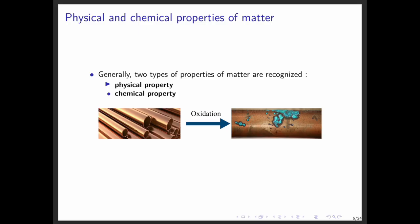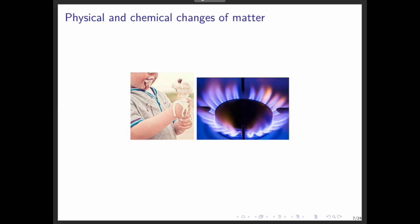Just like properties, the changes matter undergoes are also divided into two categories. Physical changes occur when the substance changes in appearance, but not in composition. For example, ice melting into water. It's still H2O. Chemical changes occur when the composition itself changes and a new substance is formed. For example, when natural gas burns or when iron rusts.